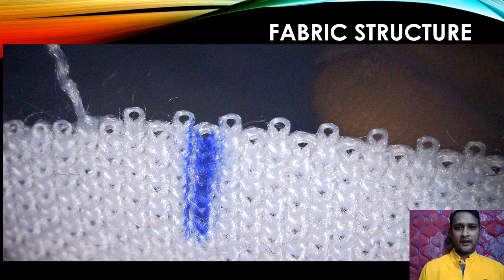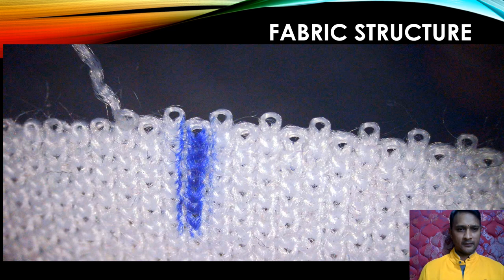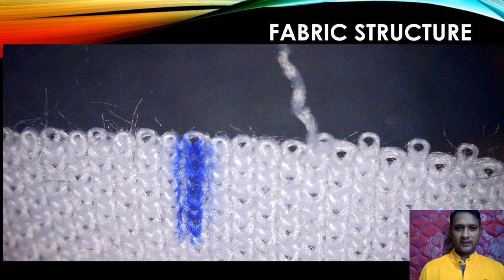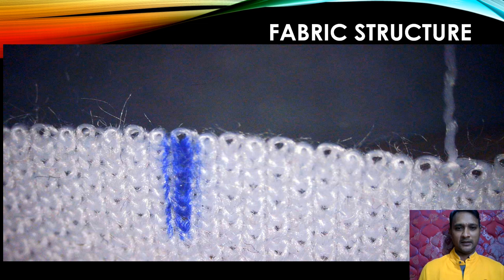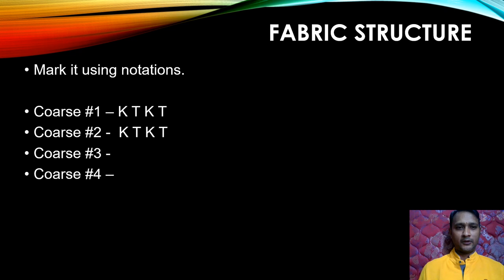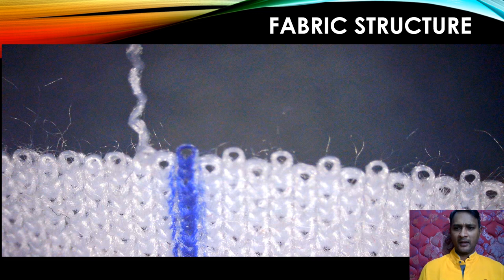Now I am going to unravel course number two. After that vertical line, I could see the same similar structure as we found in course number one — knit, tuck, knit, tuck. So let's mark course number two the same as course number one: knit, tuck, knit, tuck.